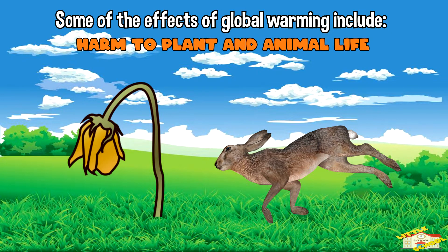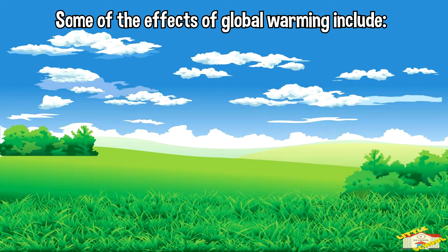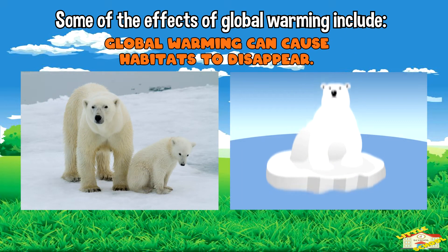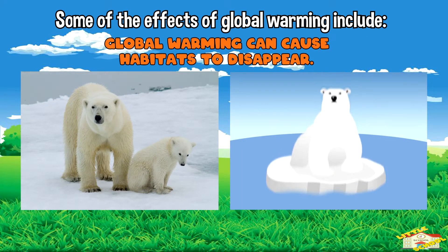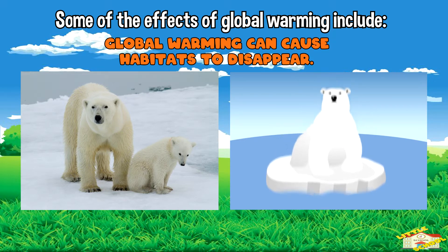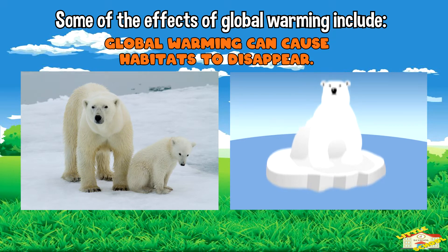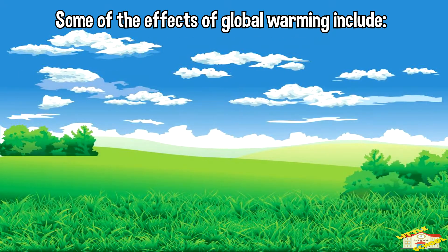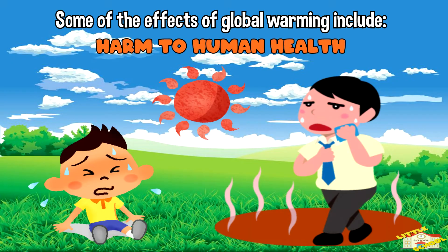Global warming also causes harm to plant and animal life, as many species are not able to adapt to the changing climate. Some animals, like polar bears, are particularly vulnerable because their habitats are disappearing as the Arctic sea ice melts.